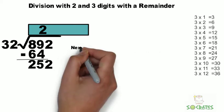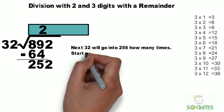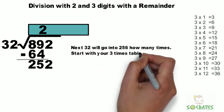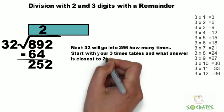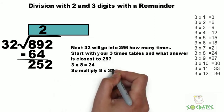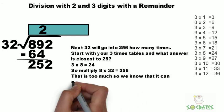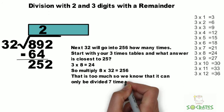So next 32 will go into 256 how many times? Start with your 3 times tables, and what answer is closest to 25? Well, 3 times 8 is 24, but if you multiply that out, you get 256, and that is too much. So we know it can only be divided 7 times.